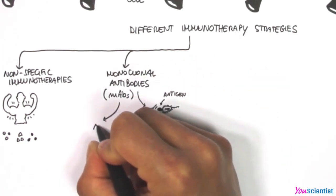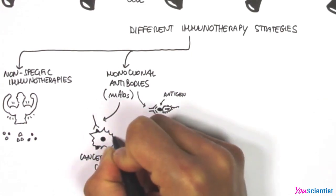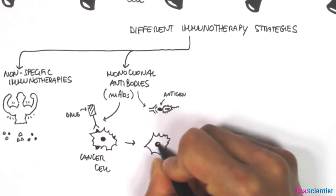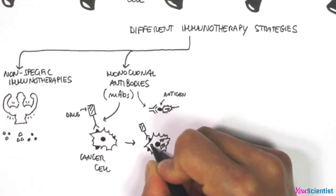Monoclonal antibodies are man-made antibodies engineered to target cancer cells specifically. They can also be modified to carry drugs directly to cancer cells. Once the antibody is internalized, the drug is released and kills the cell.